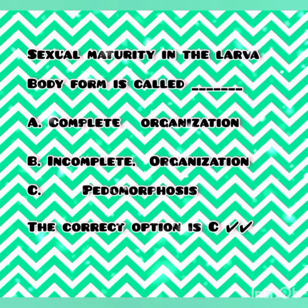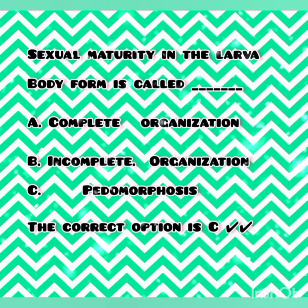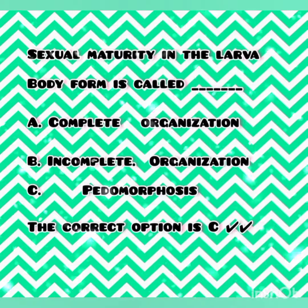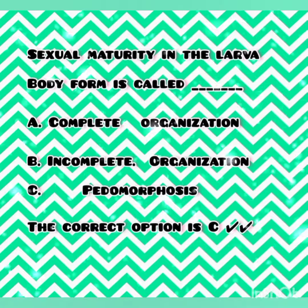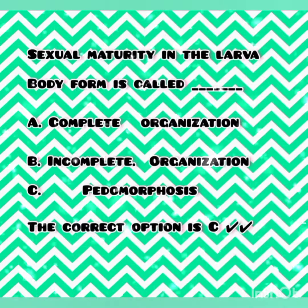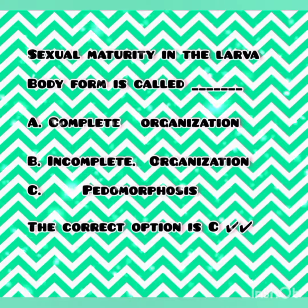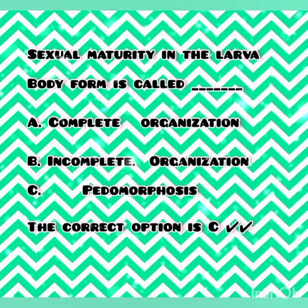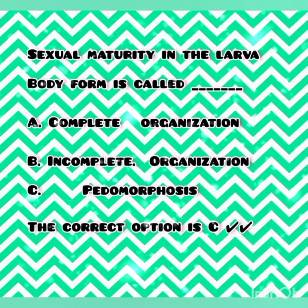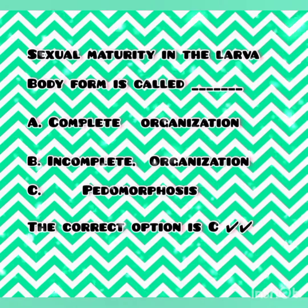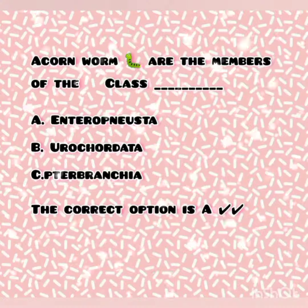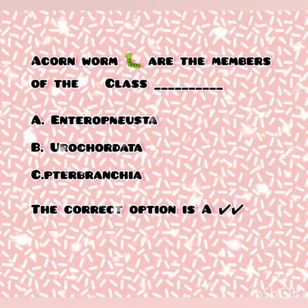The next question: sexual maturity in a larval body form is called what? The options are complete metamorphosis, incomplete metamorphosis, and pedomorphosis. The correct option is C — that is pedomorphosis.